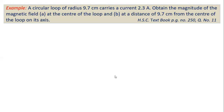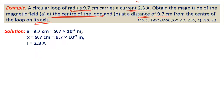A circular loop of radius 9.7 cm carries a current of 2.3 ampere. Find the magnitude of the magnetic field at: (1) the center of the loop, and (2) a point on its axis at a distance of 9.7 cm from the center. Here a = 9.7 cm = 9.7 × 10⁻² m, x = 9.7 cm = 9.7 × 10⁻² m, and I = 2.3 A.